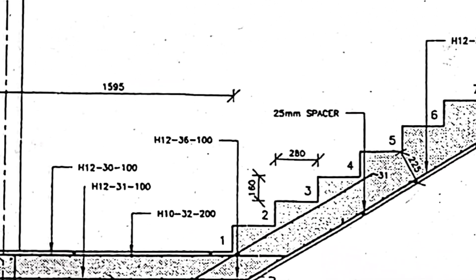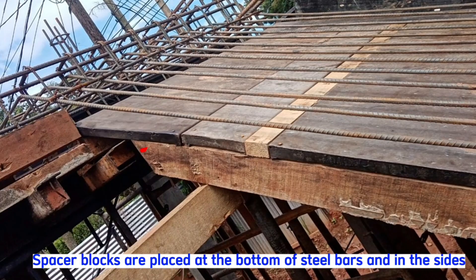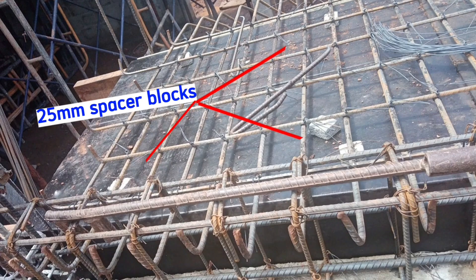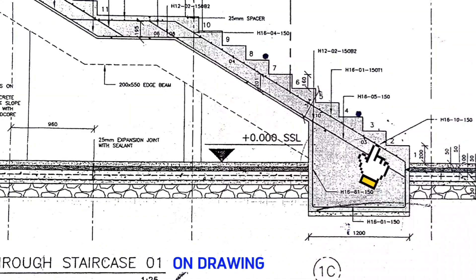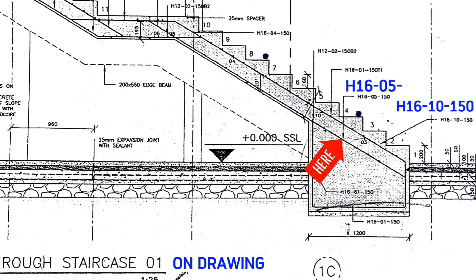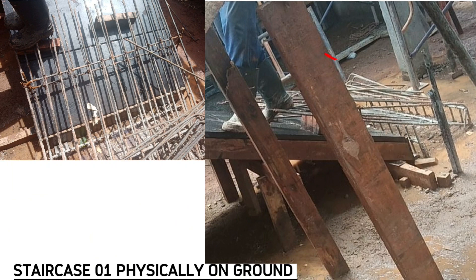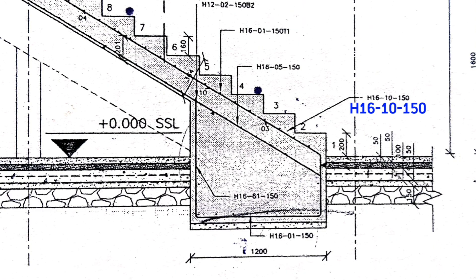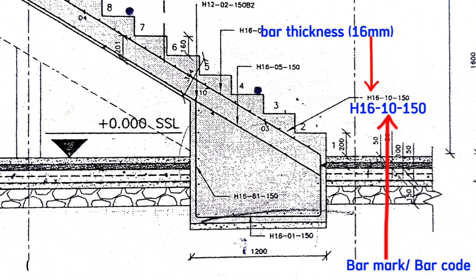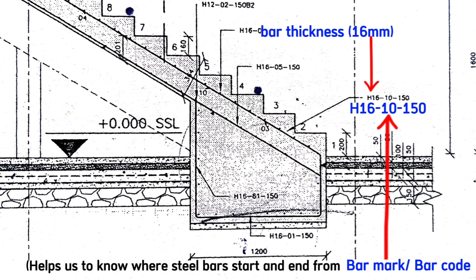We use 25 millimeters spacers everywhere in the staircases. These are the 25 millimeter spacer blocks which are placed directly under the steel bars in the ramp and also in the landing to provide the required concrete gauge. This is H16 Cod 10 spacing as 150 millimeters here above, and here below are bars of H16 Cod 5 at a spacing of 150 millimeters center to center. Physically, these are the H16 bars of Cod 10 and these are the H16 bars of Cod 5. This H16 is the bar thickness, therefore our steel bars are of 16 millimeters thickness. This Cod either 10 or 5 helps us to know where our steel bars start and end from. This 150 is the spacing from one steel bar to another.